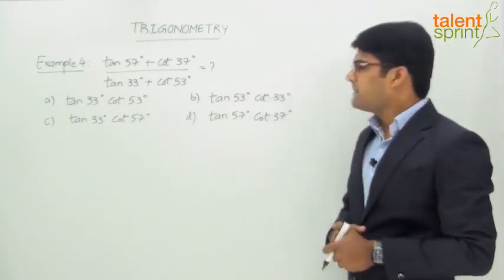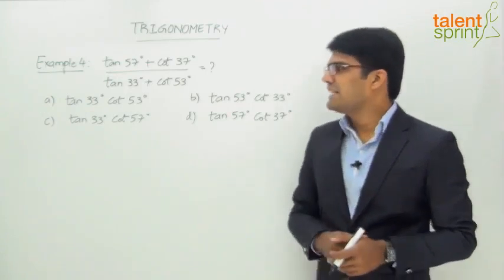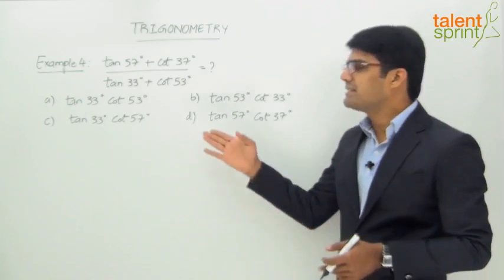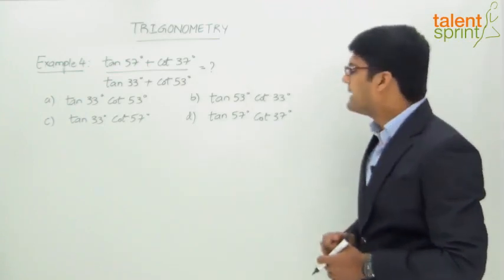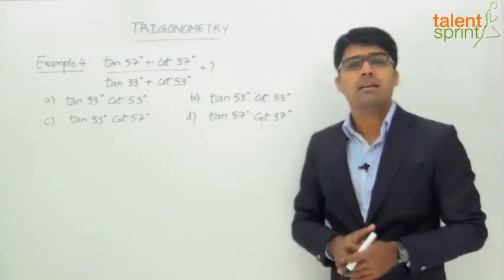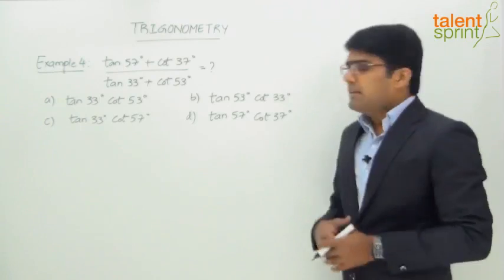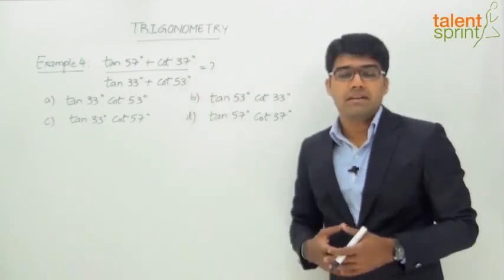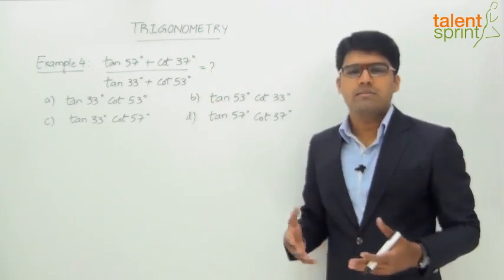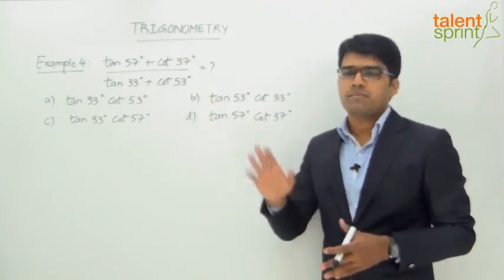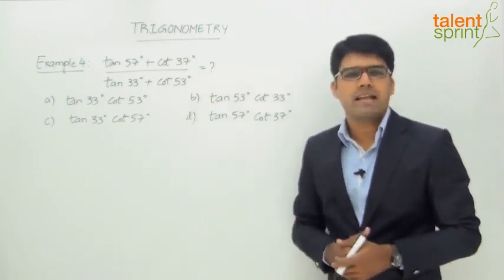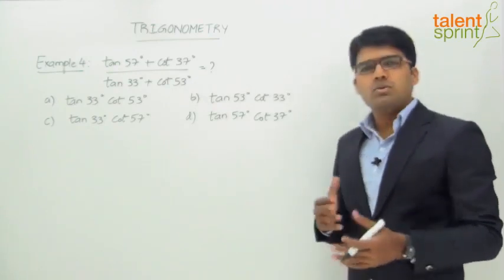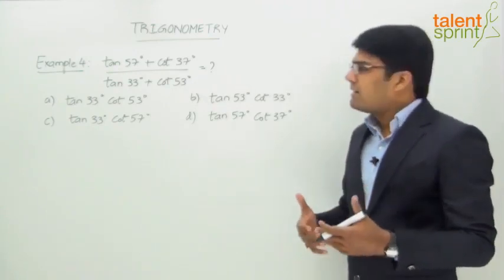We have four answer options: tan33·cot53, tan53·cot33, tan33·cot57, and tan57·cot37. There is no point in trying to evaluate what tan57 degrees actually is — these are all typical values with no straightforward numerical form. So let's try to convert them into some other form.